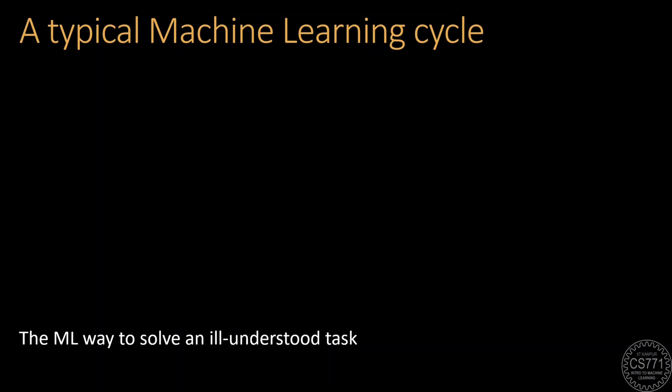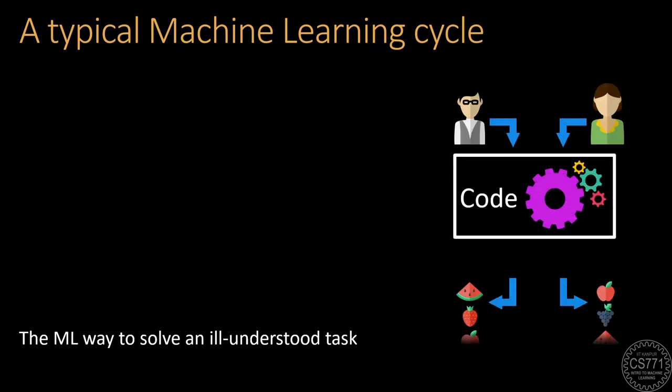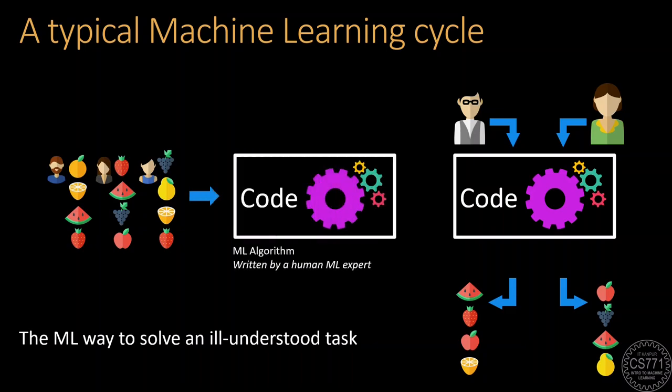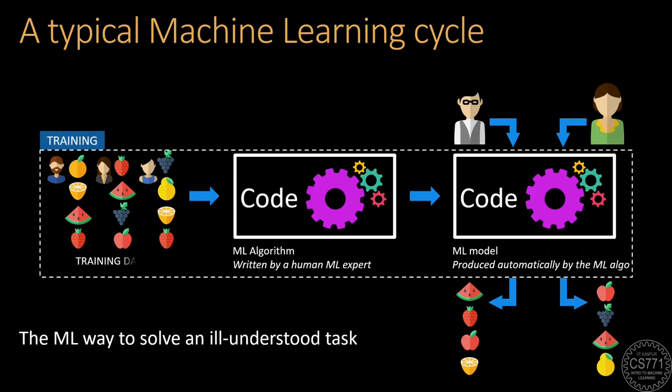In our previous discussions, we have seen that machine learning can be used to solve tasks for which it is difficult to write code directly. So, we instead collect lots of examples of the input-output behavior required by our task, in this case recommending fruits to our users, and use this as training data to learn a machine learning model to solve the actual task.